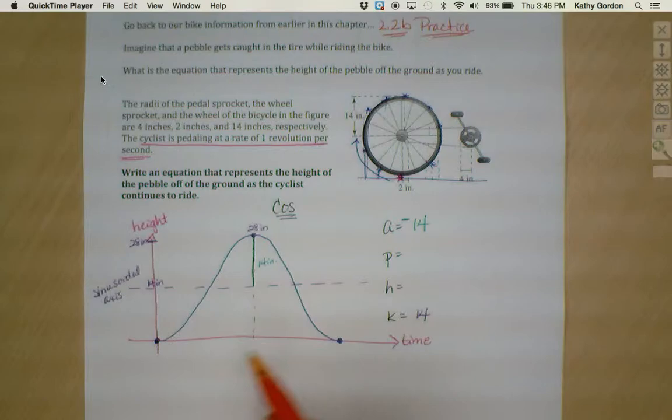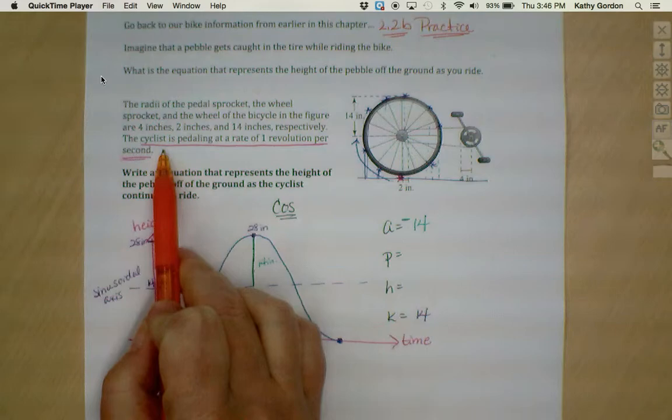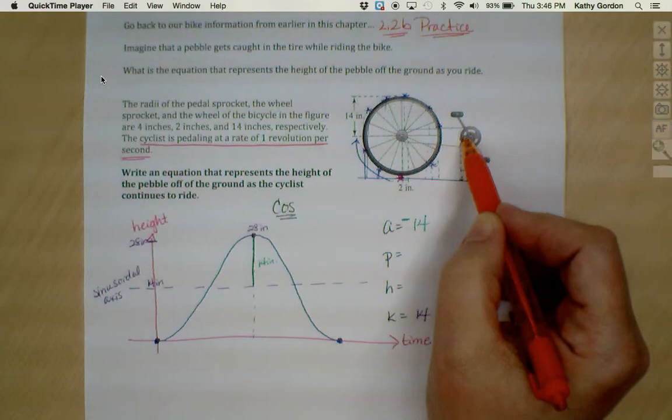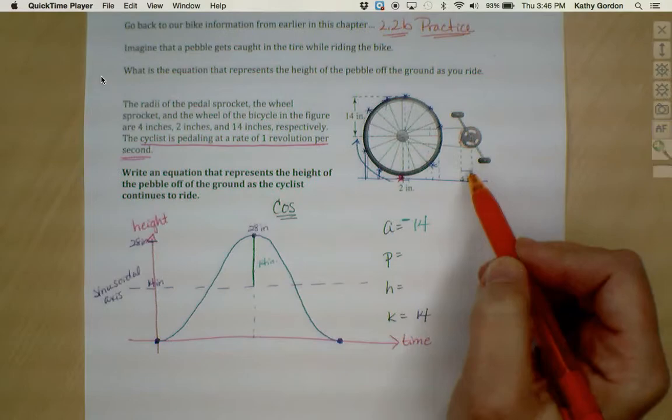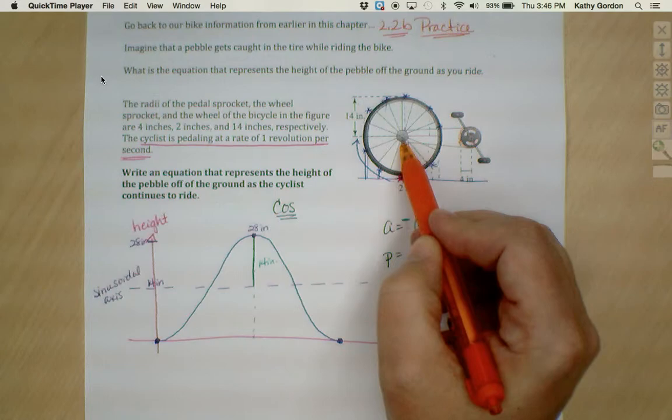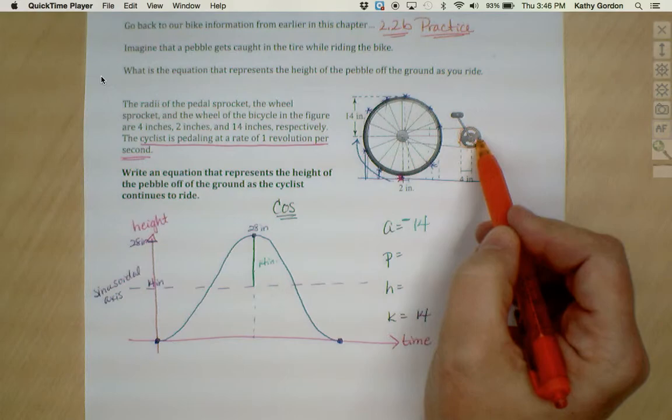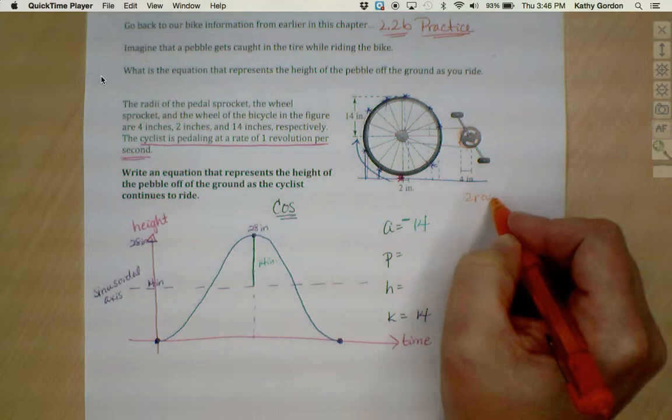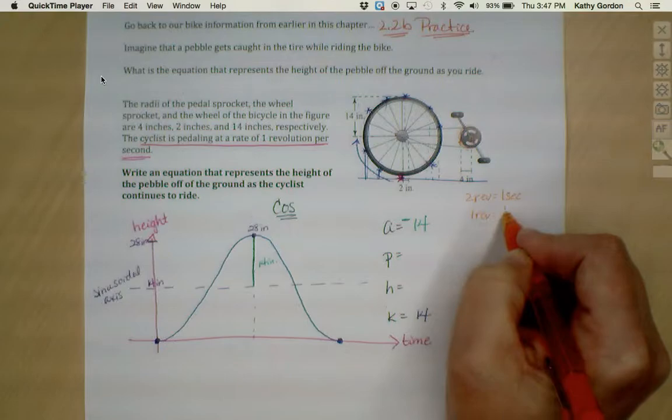What about the period? What do I know about how long it took to make one rotation around the wheel? Well, that's where this information comes in. It told us that the cyclist was pedaling at a rate of one revolution per second. So that was this wheel. This wheel goes around once in one second. But remember, because my radius on this little wheel where the chain is connected is half as much as this one, it means that one rotation of this wheel is actually going to cause two rotations of this wheel.